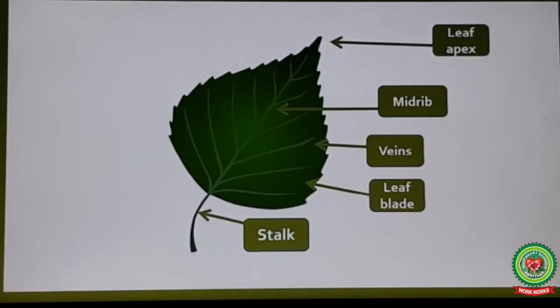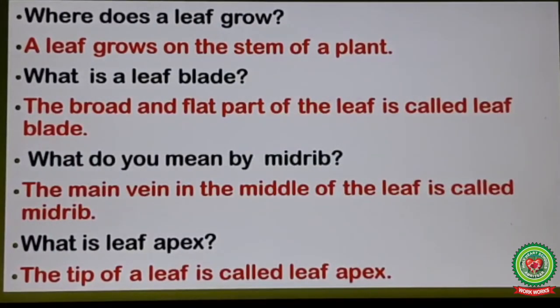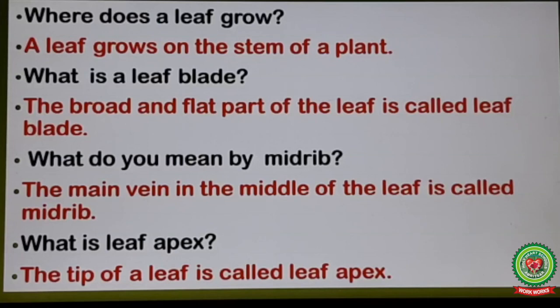Now let's revise. First question: where does a leaf grow? A leaf grows on the stem of a plant. Second: what is a leaf blade? The broad and flat part of the leaf is called the leaf blade. Third: what do you mean by midrib? The main vein in the middle of the leaf is called midrib. Last question: what is leaf apex? The tip of a leaf is called the leaf apex. Tomorrow I will continue with the next topic. Till then, read the chapter and revise the questions. Thank you.